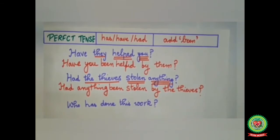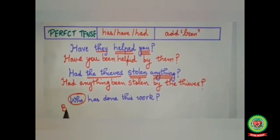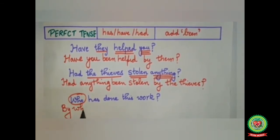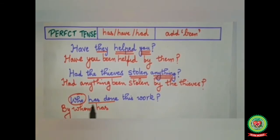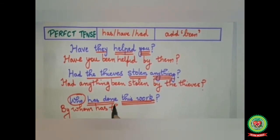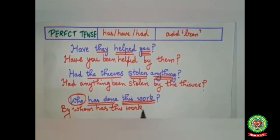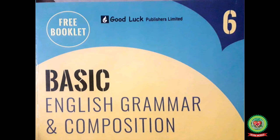'Been' will be added after 'anything', so the answer becomes: 'Had anything been stolen by the thieves?' Now the last example: 'Who has done this work?' Whenever we are given 'who', it will always change to 'by whom'. After 'by whom' we have to add a helping verb. 'Has' will remain because 'this work' is singular. 'Done' changes to 'done' in V3 form, and 'this work' is the object. The answer becomes: 'By whom has this work been done?'